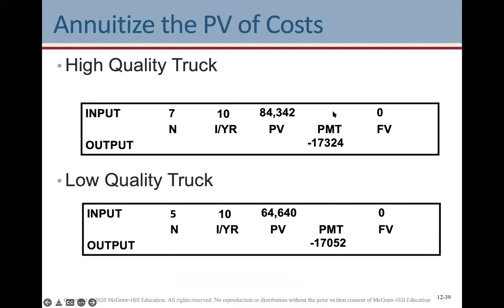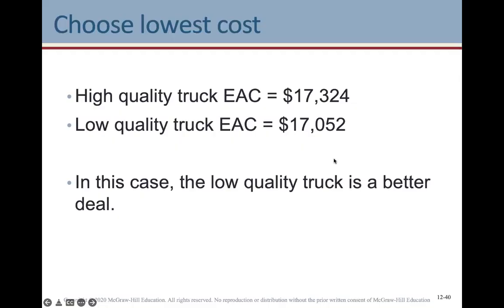Now we annuitize each total present value to find the EAC — the payment is our output. For the high-quality truck: N=7, I=10%, PV=$84,342, FV=0; solve for payment. For the low-quality truck: N=5, I=10%, PV=$64,640, FV=0; solve for payment. The EAC for the high-quality truck is $17,324 per year, and for the low-quality truck is $17,052 per year. The low-quality truck is the better deal — overall it costs about $272 less per year.